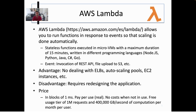AWS Lambda is a service that allows running functions in response to events so that scaling is done automatically. These are stateless functions — stateless means they have no affinity with the underlying execution infrastructure. They execute in micro-virtual machines with a maximum duration of 15 minutes. You can define several sources of events: invoking a REST API triggers the execution of a Lambda function, and uploading a file also triggers the execution of a Lambda function.